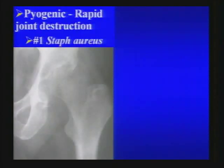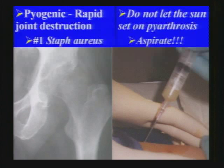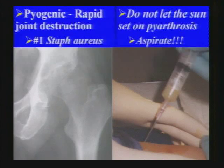If you suspect septic arthritis, pyogenic or bacterial infections of joints can cause rapid joint destruction. The most common organism is Staph aureus. As orthopedists say: do not let the sun set on suspected pyarthrosis. If it's even on your differential, consider aspirating the joint before it's too late.